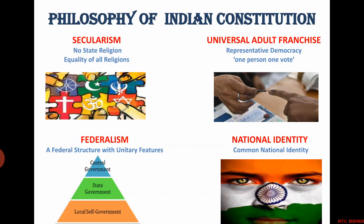Federalism. India has a federal structure with many unitary features. Like all federations, we also have three levels of government, division of power and a written constitution. However, single citizenship, residuary powers of the centre and emergency provisions provide a unitary bias. National identity is also one of the basic principles. The Indian constitution tries to create a common national identity. India is a nation with multi-ethnic, religious and multi-linguistic identities, and common national identity has been given preference so that the unity of the country is not endangered.